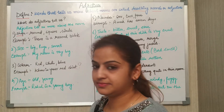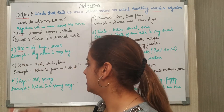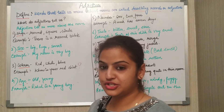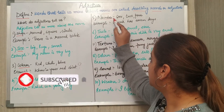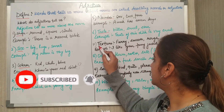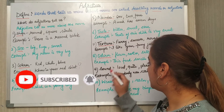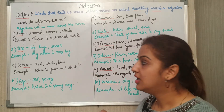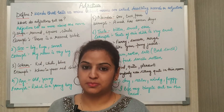Adjectives can describe: shape, size, color, age, number, taste, texture, odor, sound, and weather.